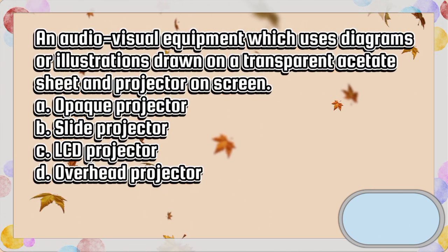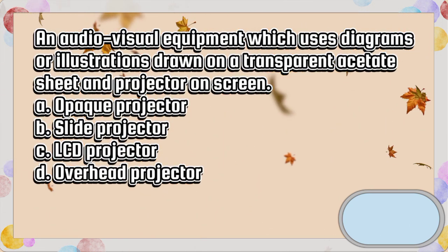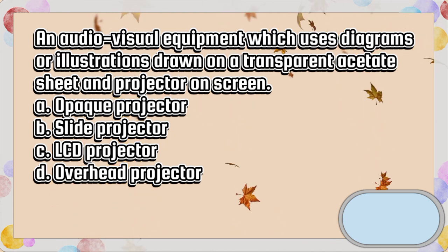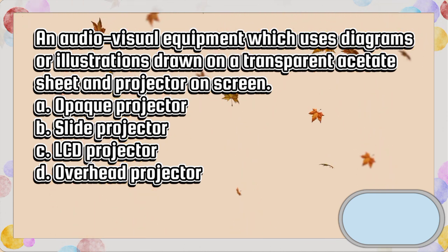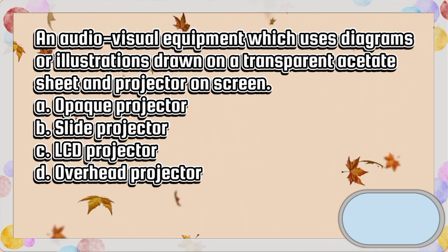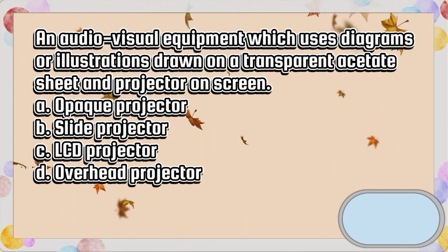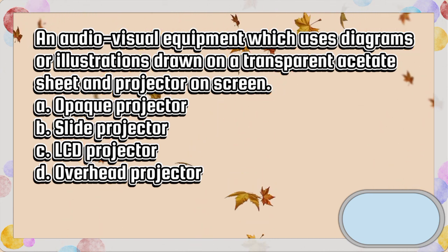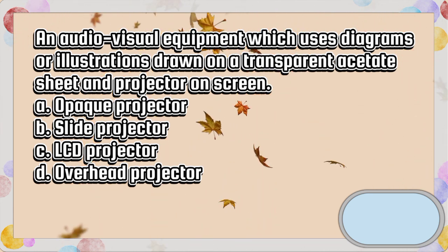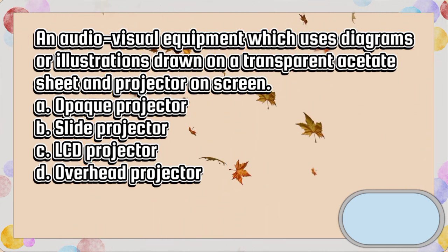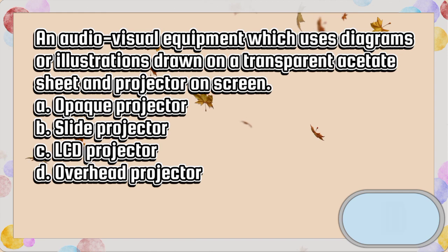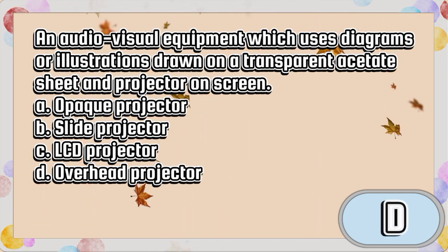An audiovisual equipment which uses diagrams or illustrations drawn on a transparent acetate sheet and projected on screen. A. Opaque projector. B. Slide projector. C. LCD projector. D. Overhead projector. The answer is letter D.